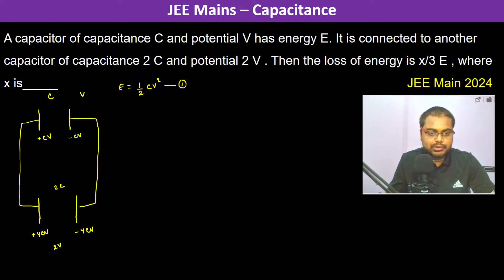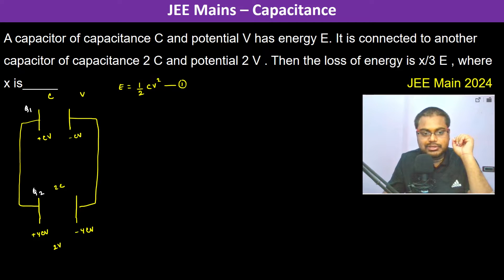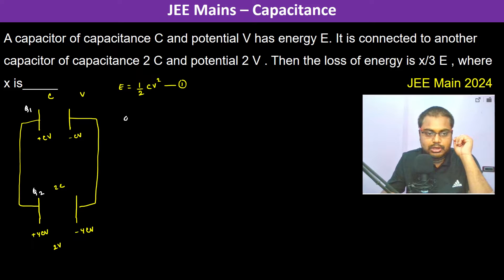When both capacitors are connected, the charges are going to redistribute, becoming q1 and q2. The charges redistribute such that the potential difference across both capacitors is the same. Therefore, q1 plus q2 is equal to 5CV — this is the charge conservation condition, since plus 4CV and plus CV gives 5CV.